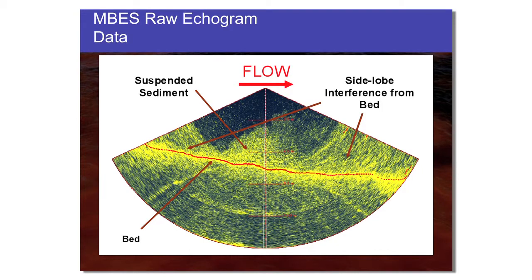This is one of the first images we obtained — the raw echogram from a Sea Bat sonar. Outside of the side-lobe interference zone, we're looking at a plume of suspended sediment moving over a mobile boundary in the Paraná River. It allows us to begin seeing the potential of this tool for looking at plumes of sediment moving through the sonar swath. When we saw this, we were really excited about the possibilities that collecting this data would open up for trying to understand the dynamics of these flow environments.